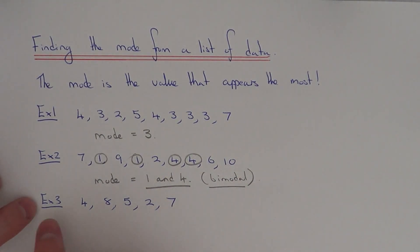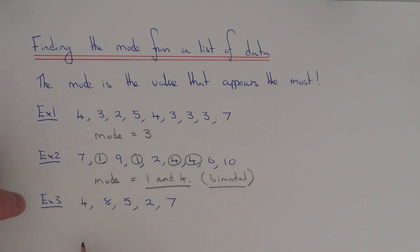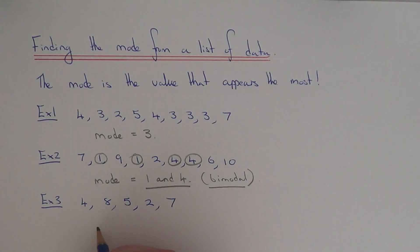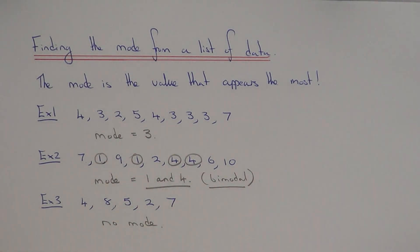So let's move on to example 3. This time we've got 4, 8, 5, 2 and 7. So what is the mode this time? Well, if you look at your numbers, you can't see a number which appears more than the others — there's only one of each number. So on this example there wouldn't be a mode, so you'd write down 'no mode'. Don't put the answer 0 down because that would be wrong — you need to write down 'no mode'.